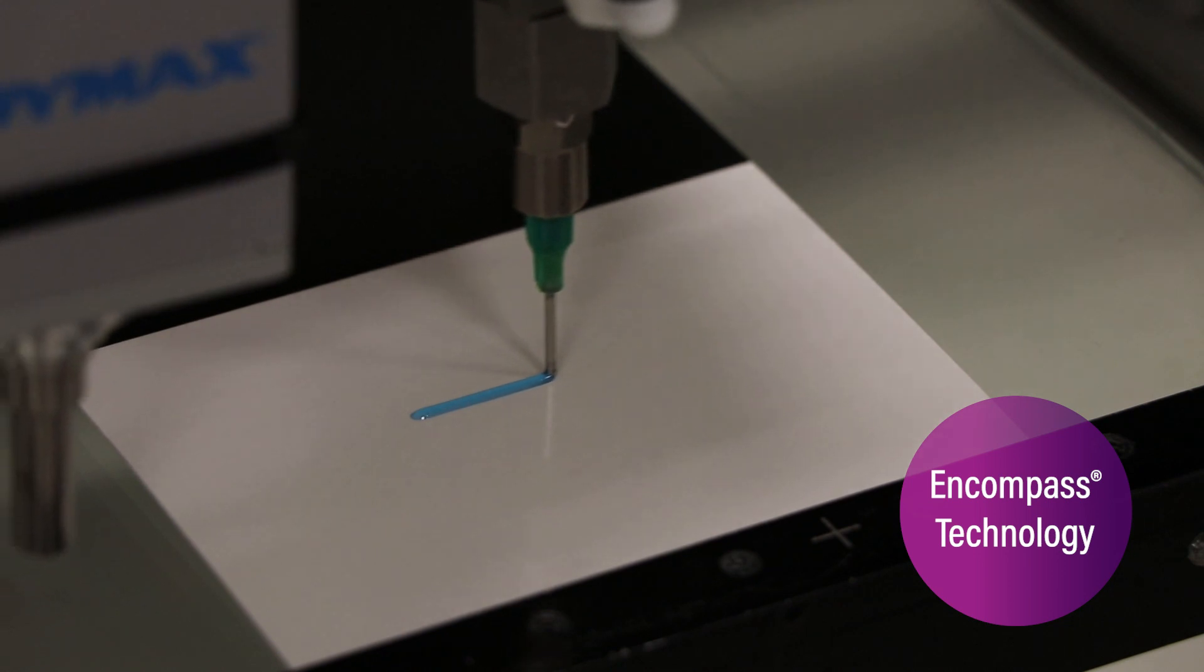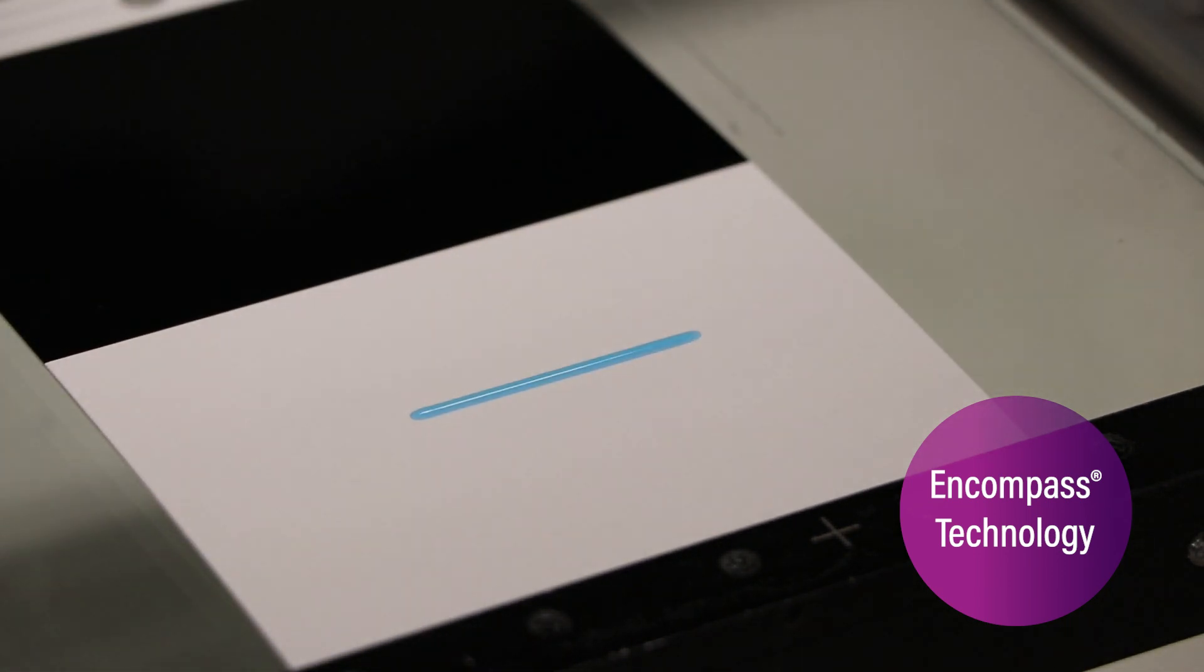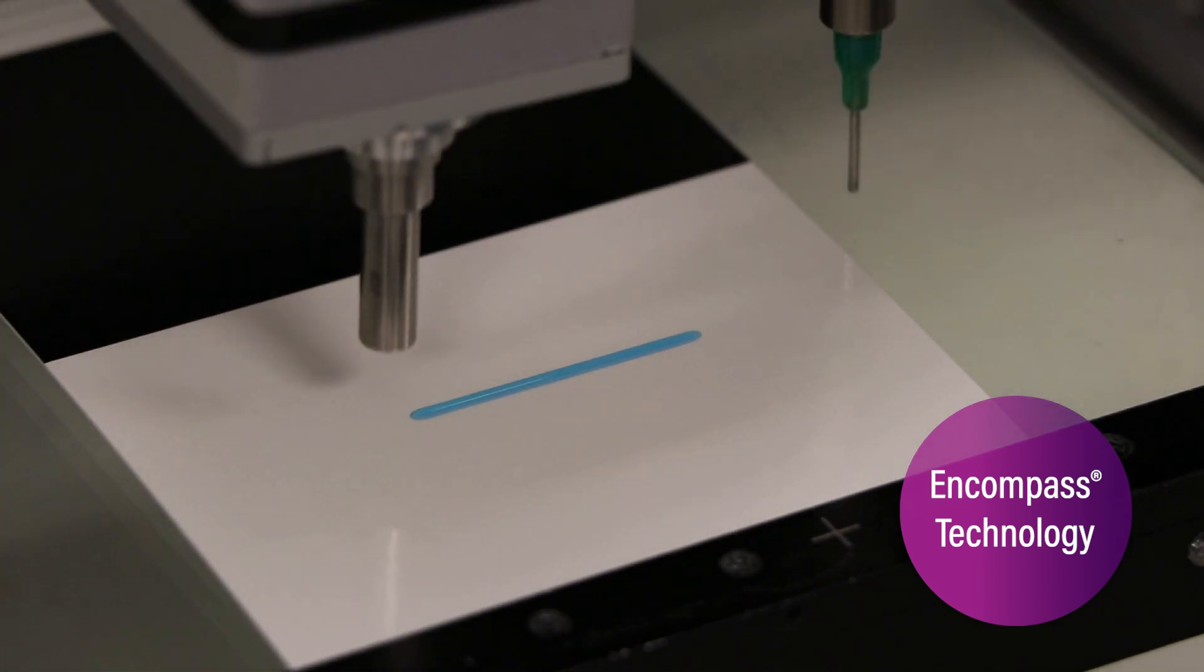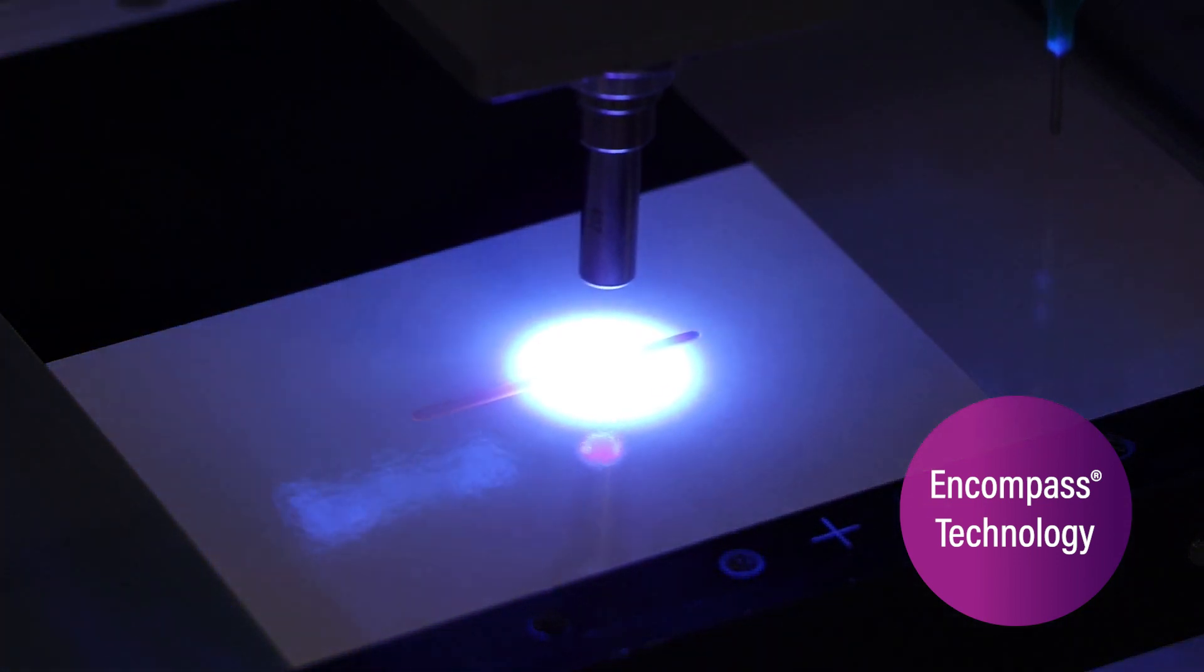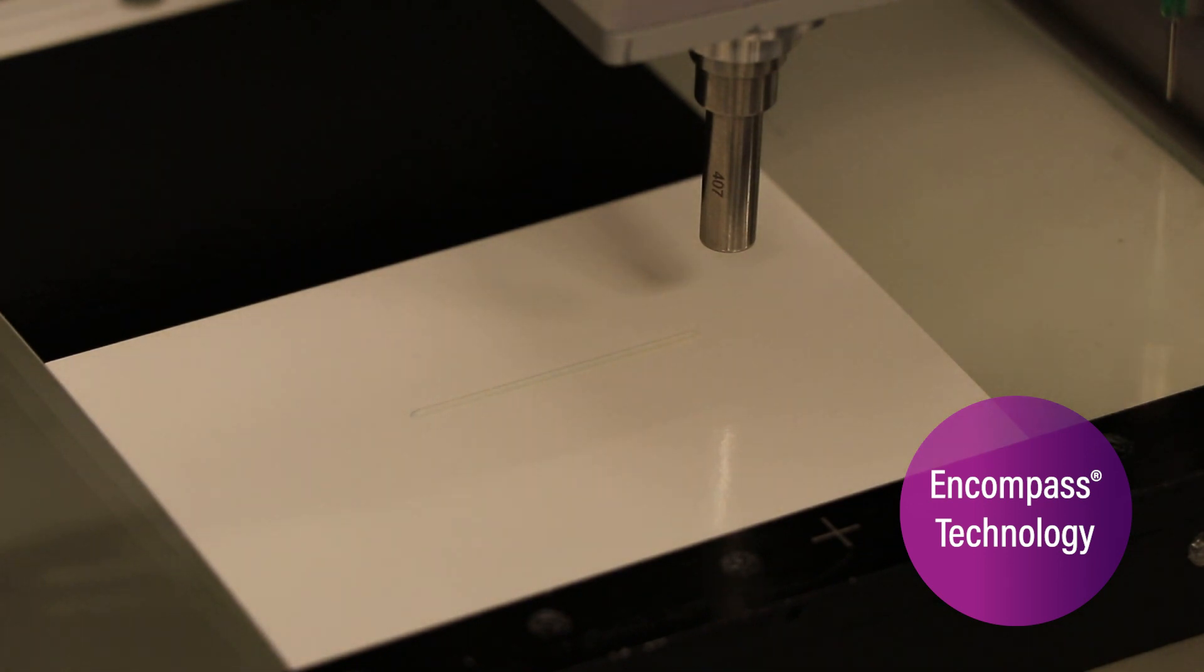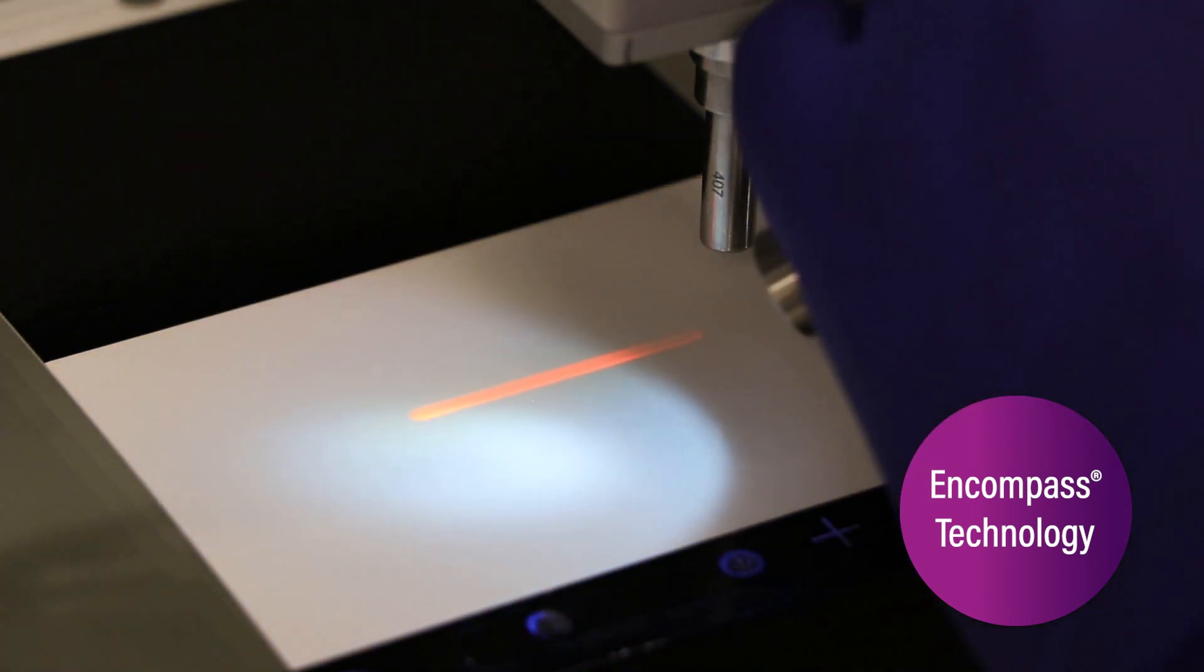like Dymax adhesives formulated with Encompass technology, have built-in visual cure validation that makes it easy for operators or simple automated optical inspection systems to confirm cure without needing additional specialized equipment.